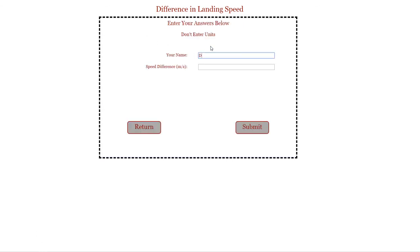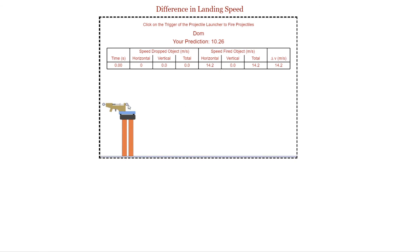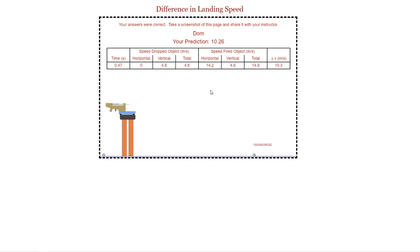All right, so enter your name and the speed difference — 10.26 meters per second. And we're going to click on the balls to initiate their launch. This one's taking off real fast, and it's going down. And there we go — we predicted 10.26, and the final answer was 10.3. So we did a good job. Our answers are correct.